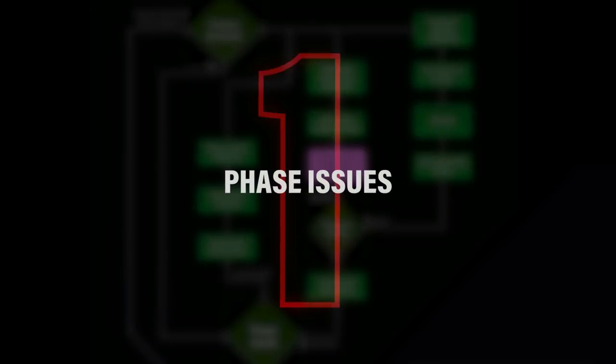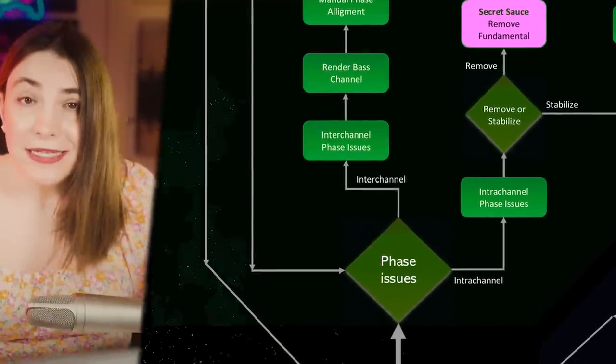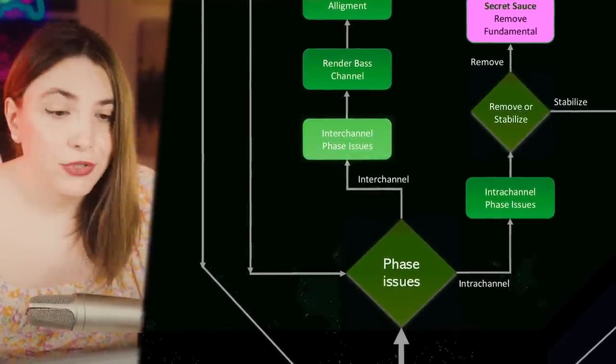Number one: phase issues. This is one of the most crucial and important issues, and if you have this one you really need to fix it to get a solid low end. Phase issues can be separated into two different parts. Let's start with inter-channel phase issues — inter-channel means that you have multiple channels that are interacting and canceling each other because of phase issues.